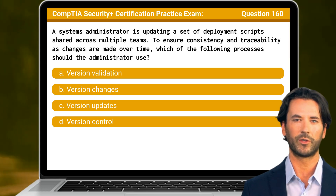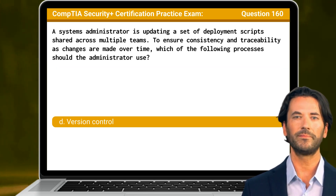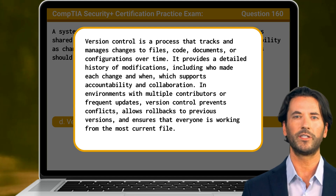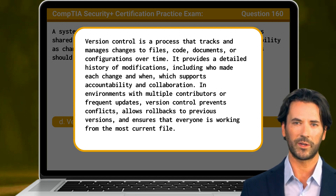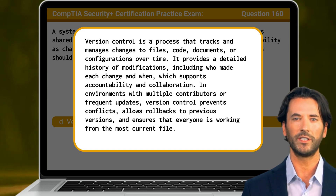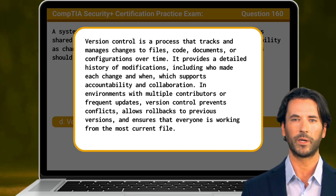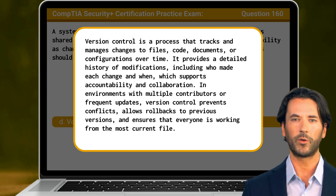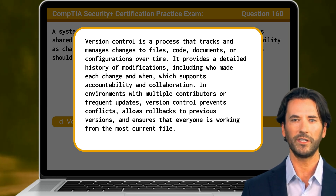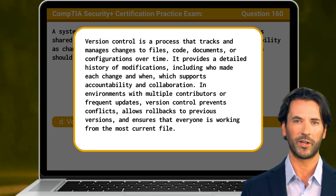The answer is D. Version control. Version control is a process that tracks and manages changes to files, code, documents, or configurations over time. It provides a detailed history of modifications, including who made each change and when, which supports accountability and collaboration. In environments with multiple contributors or frequent updates, version control prevents conflicts, allows rollbacks to previous versions, and ensures that everyone is working from the most current file.